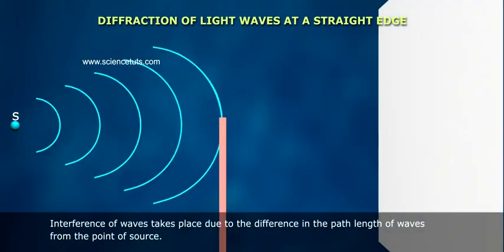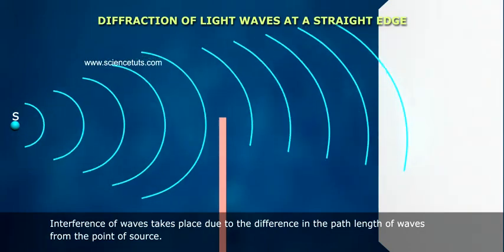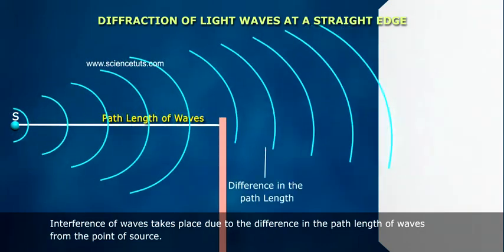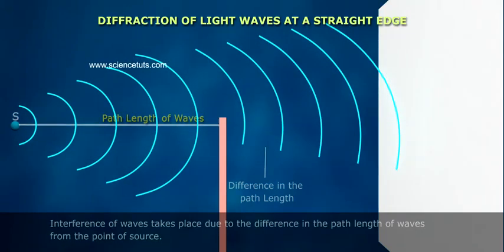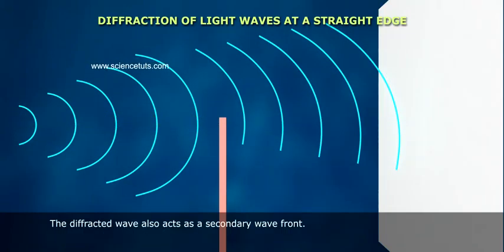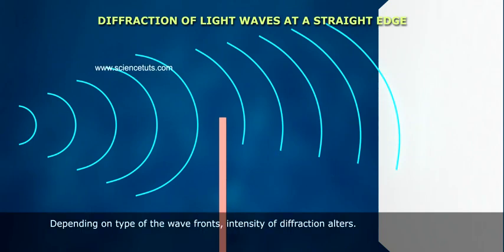Interference of waves takes place due to the difference in the path length of waves from the point of source. The diffracted wave also acts as a secondary wave front. Depending on type of the wave fronts, intensity of diffraction alters.